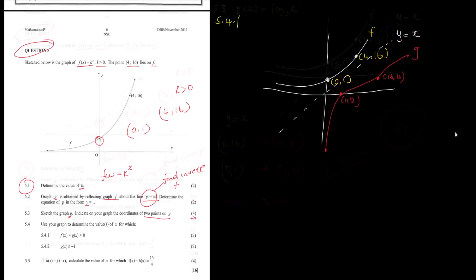Question 5.4.1 says: use your graph to determine the values of x for which f(x) · g(x) > 0. You are looking at the y-values of both graphs — when those two y-values multiplied together are greater than zero. f(x) represents the y-value of f and g(x) the y-value of g, and you are looking for the corresponding x values.